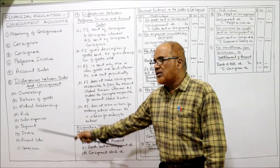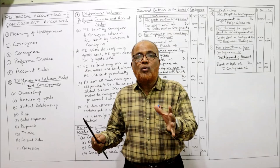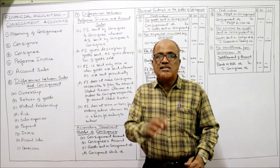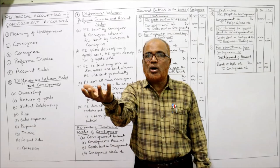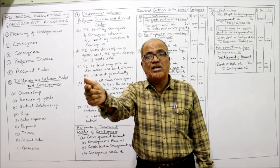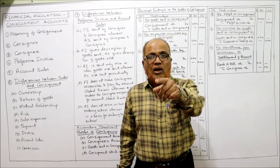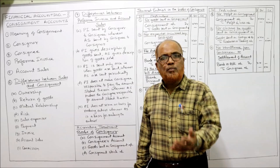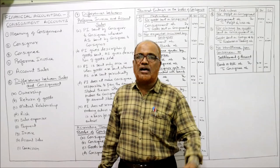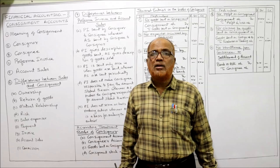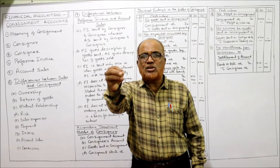Fourth difference — risk: in case of consignment, the risk of unsold goods is on the Consigner. As long as the Consignee has not sold the goods, the risk lies with the Consigner; if something happens to the goods, the loss is borne by the Consigner, not the Consignee, because the Consignee is not the owner. But in case of sale, as soon as goods are sold, the risk is also transferred to the buyer.